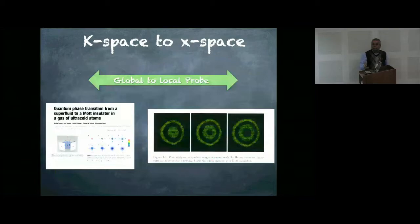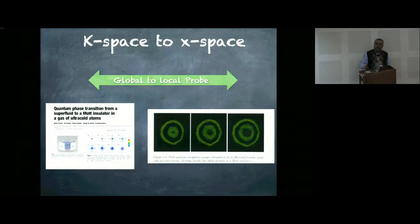One trend is going from global to local probes. A global probe measures in momentum space. There is the famous paper where people observed a quantum phase transition in an optical lattice from a superfluid to a Mott insulator — that is a global probe. The same experimental system has also been explored through a local probe: the formation of Mott lobes in real space, done using quantum gas microscopes at Harvard about seven or eight years ago.